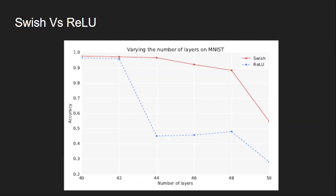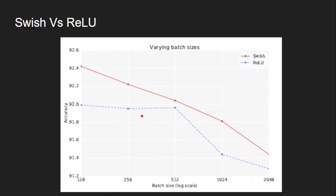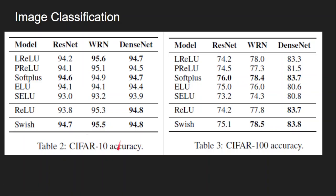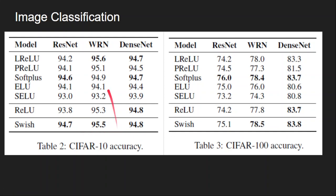Now let's compare the performance of Swish against other activation functions. Ablation studies on number of layers and batch sizes show that as the number of layers increases, Swish outperforms ReLU, and the same holds across all batch sizes. On image classification with CIFAR-10 and CIFAR-100, Swish outperformed all common activation functions across all three networks in both tasks.